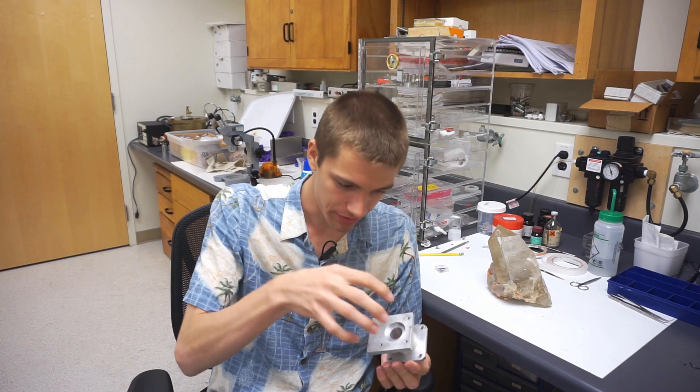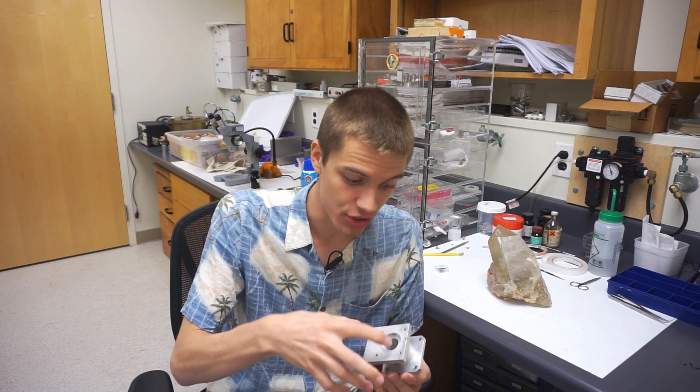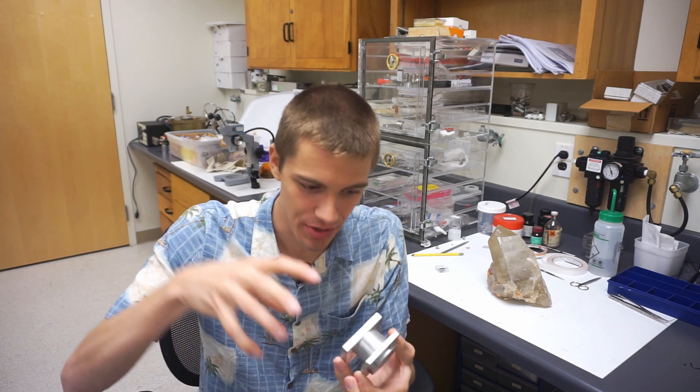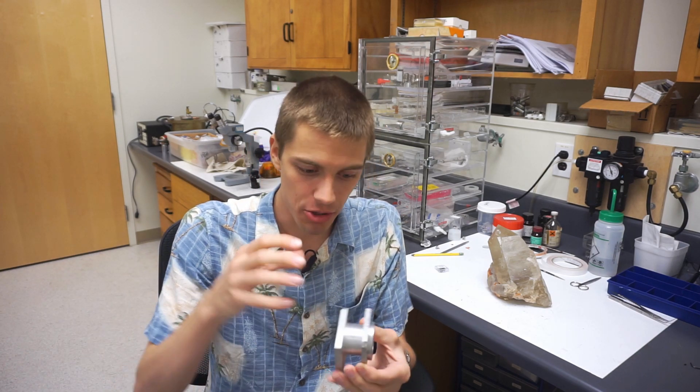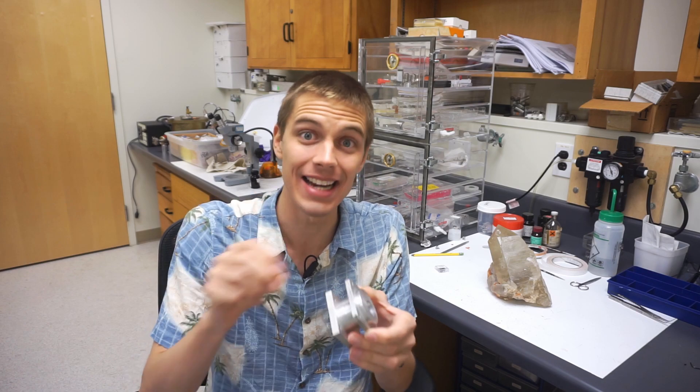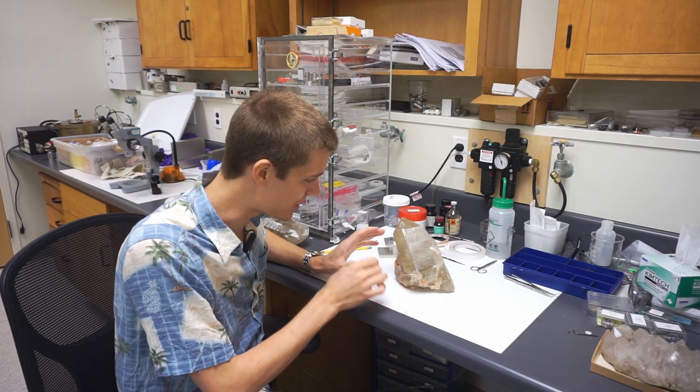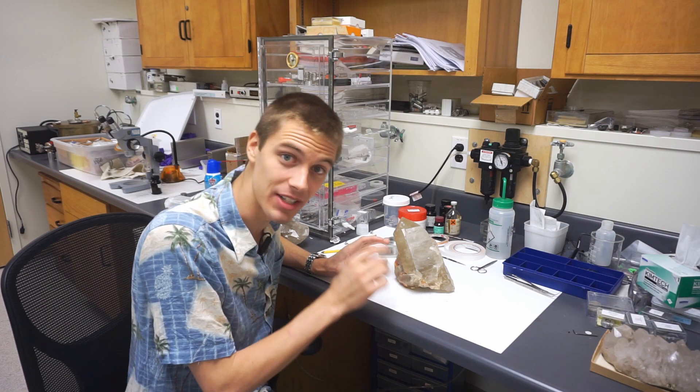Crystals, on the other hand, have all of their constituent atoms arranged in a very precise repeating pattern. If you zoomed in on this piece of aluminum to the point where you could see individual atoms, you'd find that they were all arranged in tiny little cubes. If you zoomed in on this piece of quartz far enough, you'd be able to see that all of the atoms are actually forming tiny little triangles.